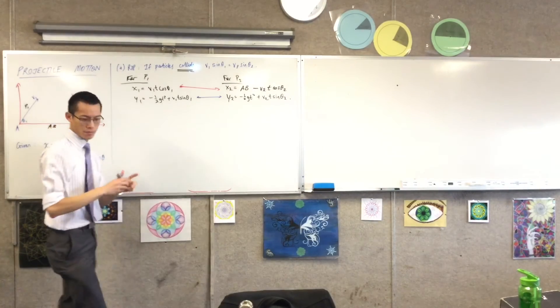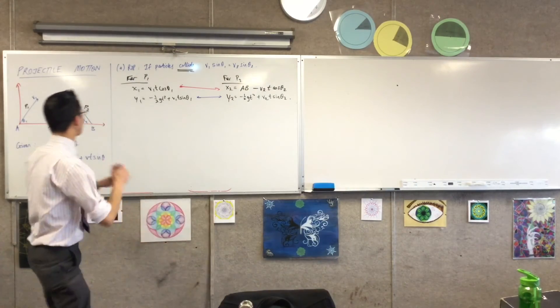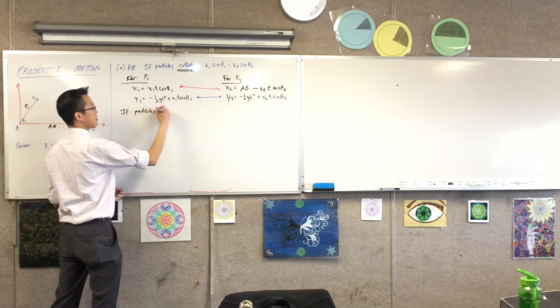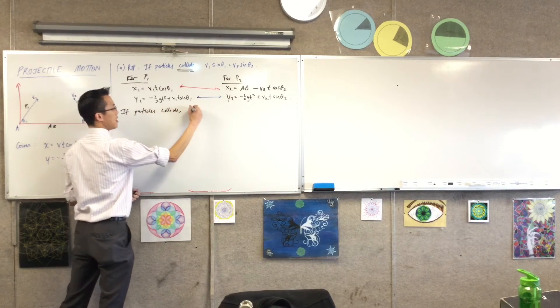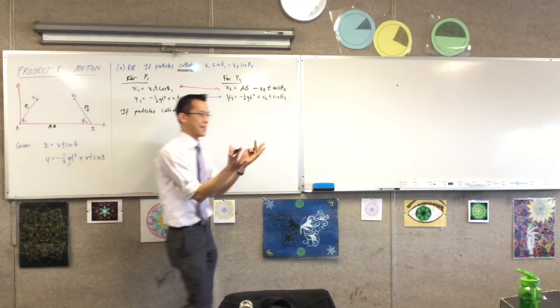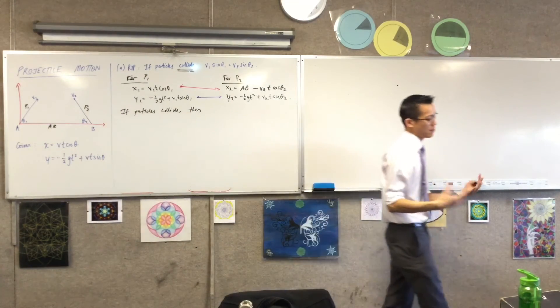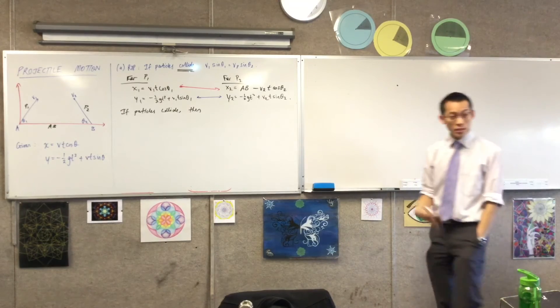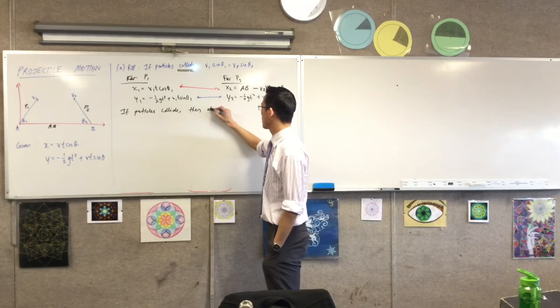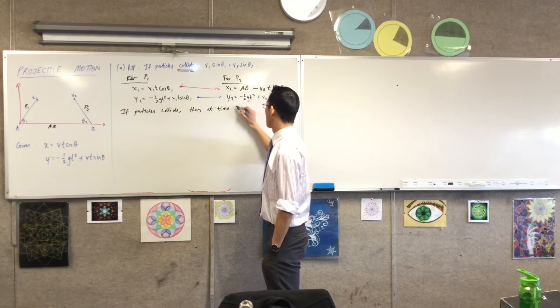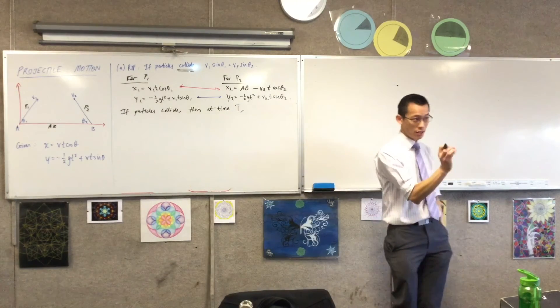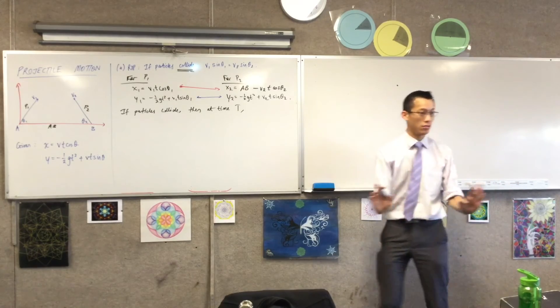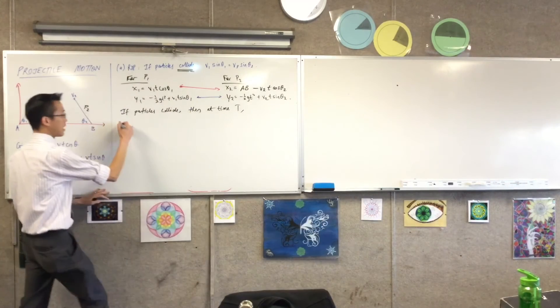If the particles collide, then there's some time, like I need a name for this because I don't know, all of this is algebra, I don't know any of these values. So I'm going to say at some time, let's call it capital T, there should be a collision. X1 and X2 should be the same, Y1 and Y2 should be the same. So I'm going to say them one at a time,